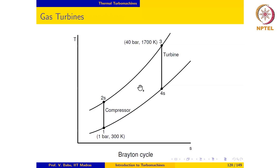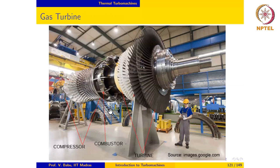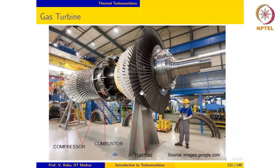Most modern land-based gas turbine power units run at a speed of 3000 RPM when the supply frequency is 50 Hz, or at 3600 RPM when the supply frequency is 60 Hz.